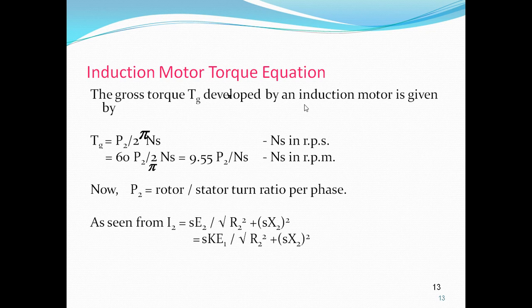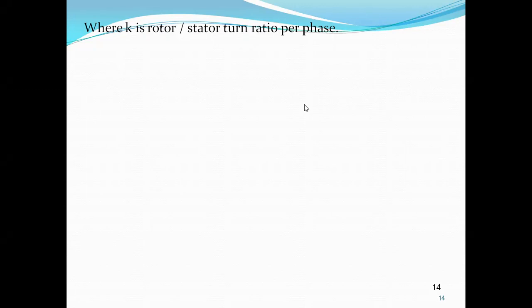The rotor current I2 = S·E2 / √(R2² + (S·X2)²), where K is the rotor-to-stator turns ratio per phase.